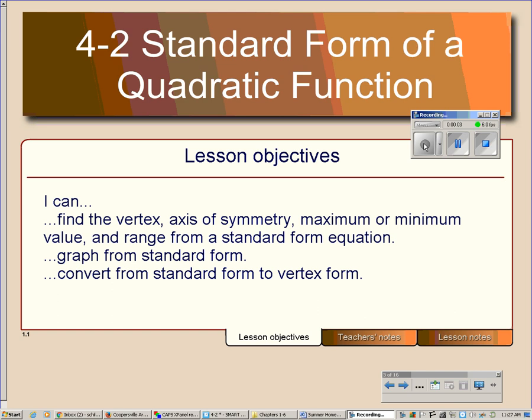Okay, lesson 4-2 is about the standard form of the quadratic function. In this lesson we will learn how to find the vertex, the axis of symmetry, maximum or minimum value, and the range of the function. We will also learn how to graph a standard form quadratic function and then we'll learn how to convert from standard form to vertex form.